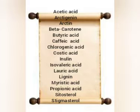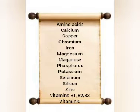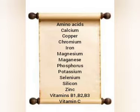The nutrients for burdock root include amino acids, calcium, copper, chromium, iron, magnesium, manganese, phosphorus, potassium, selenium, silicon, and zinc.